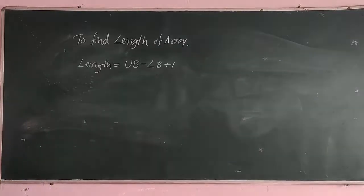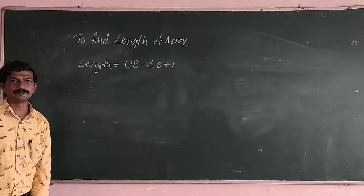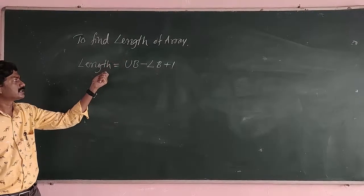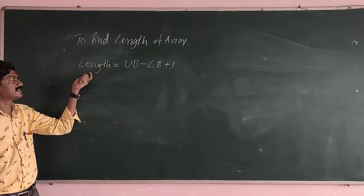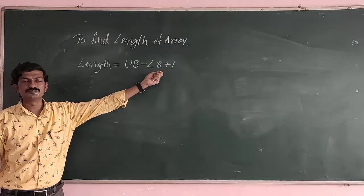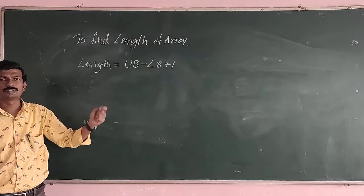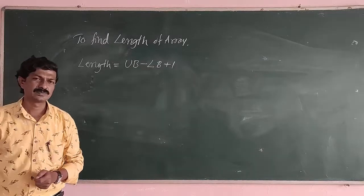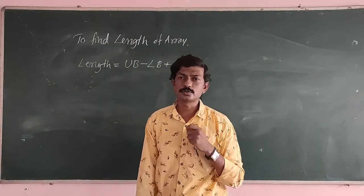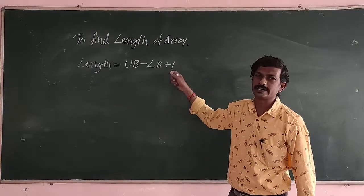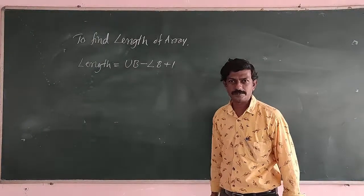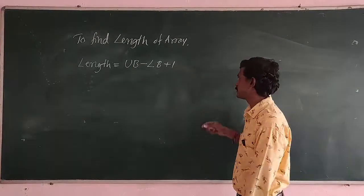Now we will discuss how to find the length of an array. To find the length of an array, it can be obtained using the formula: Length = Upper Bound minus Lower Bound plus 1. This gives the total length of an array, meaning the number of elements we are able to store in that array.